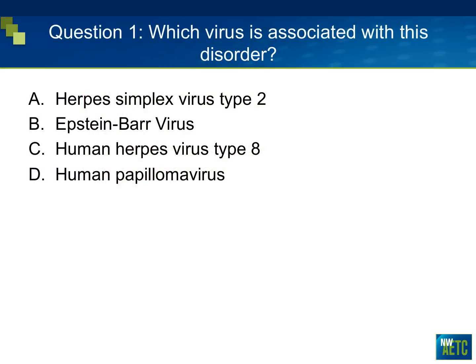The first question — which virus is associated with the disorder I just showed you in this individual's mouth? Would it be A, herpes simplex virus type 2; B, Epstein-Barr virus; C, human herpes virus type 8; or D, human papillomavirus?